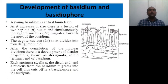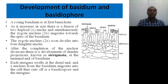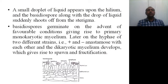A young basidium is dikaryotic. As it increases in size, there is a fusion of two haploid nuclei, and simultaneously the zygote nucleus (2n) migrates towards the apex of the basidium. This zygote nucleus undergoes division to form four daughter nuclei. After nuclear division, slender projections known as sterigmata develop. Each sterigma swells at the distal end and the nucleus from the basidium migrates into the cell that is cut off as the basidiospore.